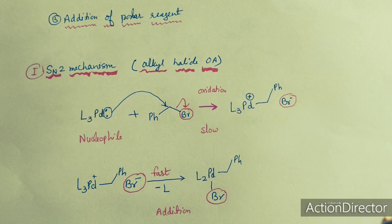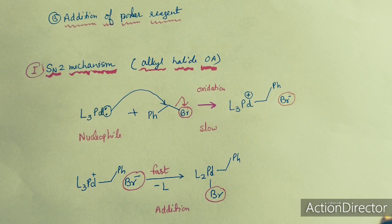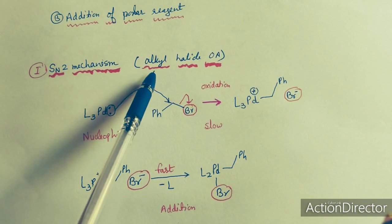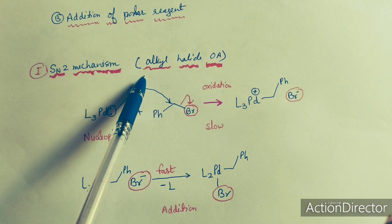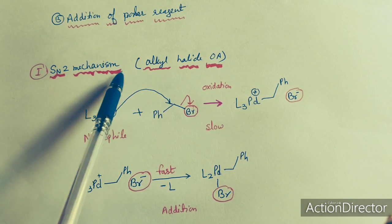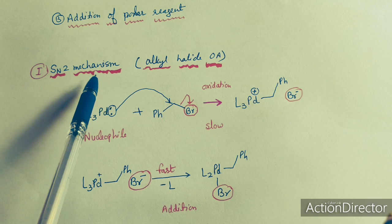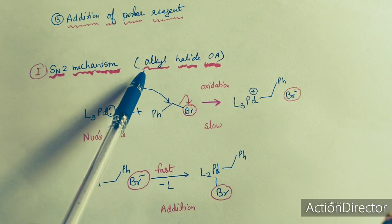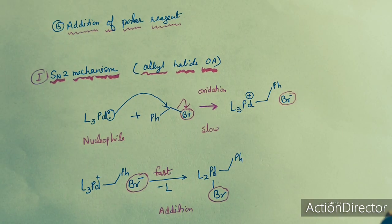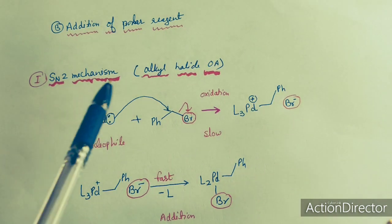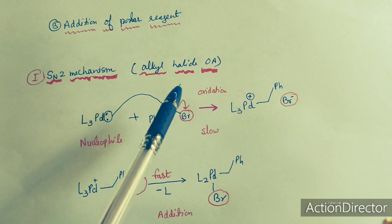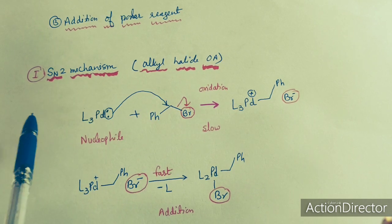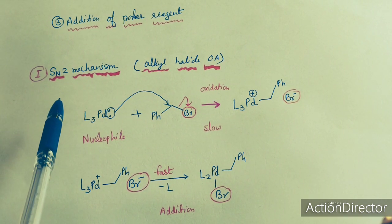In this lecture I will discuss about the SN2 mechanism only. The reagents used in oxidative addition reactions via SN2 mechanism are organic halides or alkyl halides, aryl halides, and other halides. These oxidative addition reactions occur through the SN2 mechanism.